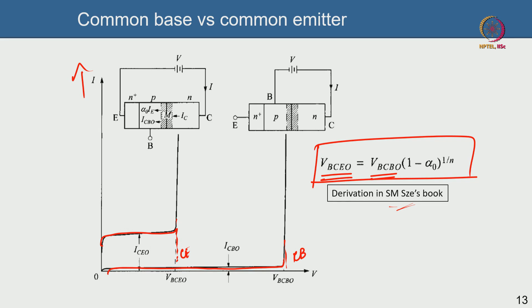With that, we conclude this lecture where we discussed the introduction of bipolar devices, the Gummel plot, and the physics of common emitter and common base configurations. In the next lecture — lecture 43 — we will talk about high injection effects, namely the Kirk effect, and then proceed to other practical details of bipolar devices. Thank you for your time; I will see you in the next lecture.